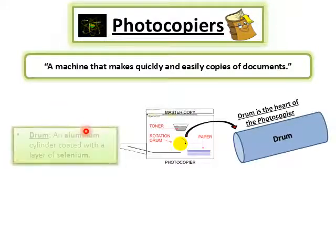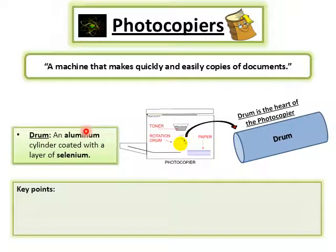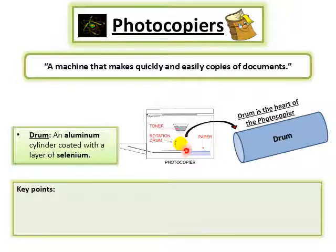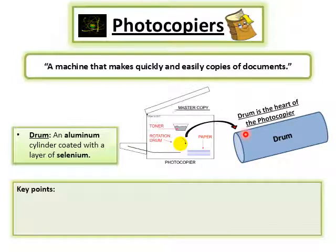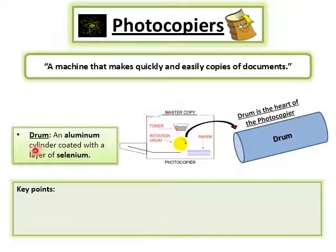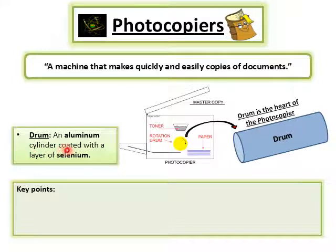Before going into the construction or working of the photocopier, I want to highlight a main important parameter of the photocopier machine, which is the drum. The drum is the most important part of the photocopier — we can call it the heart of the photocopier.